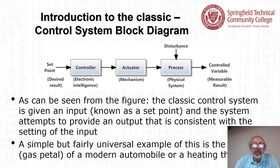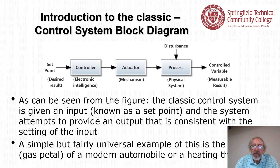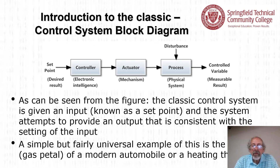The actuator is a mechanism. The process is some physical system, and our desired output is a controlled variable — some measurable result. There's also an arrow labeled disturbance, which is anything that tends to interfere with what's going on in the control system.